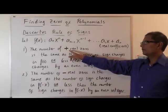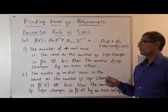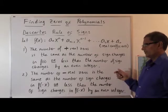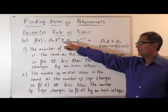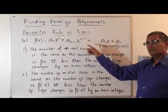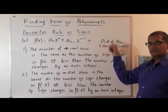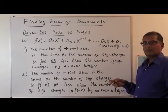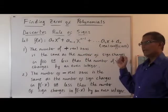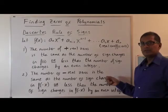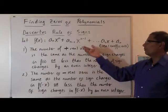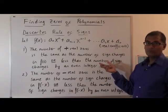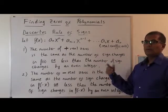It tells us that the number of positive real zeros is the same as the number of sign changes in f(x). So as you go through f(x), you get sign changes from positive to negative sometimes. The number of positive real zeros is the same as the number of those sign changes or that number minus an even number. So if you have four sign changes in f(x), you could have four positive real zeros or two positive real zeros or none.